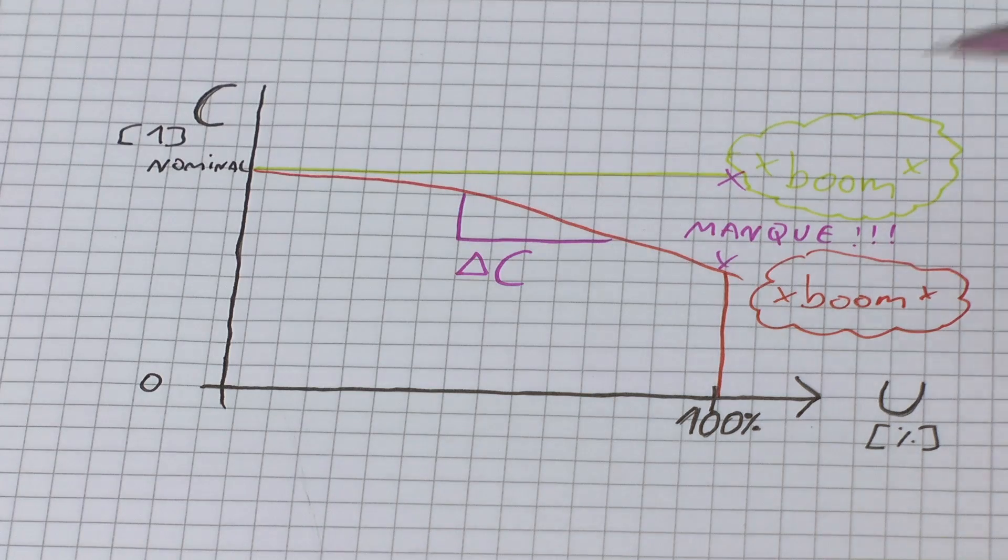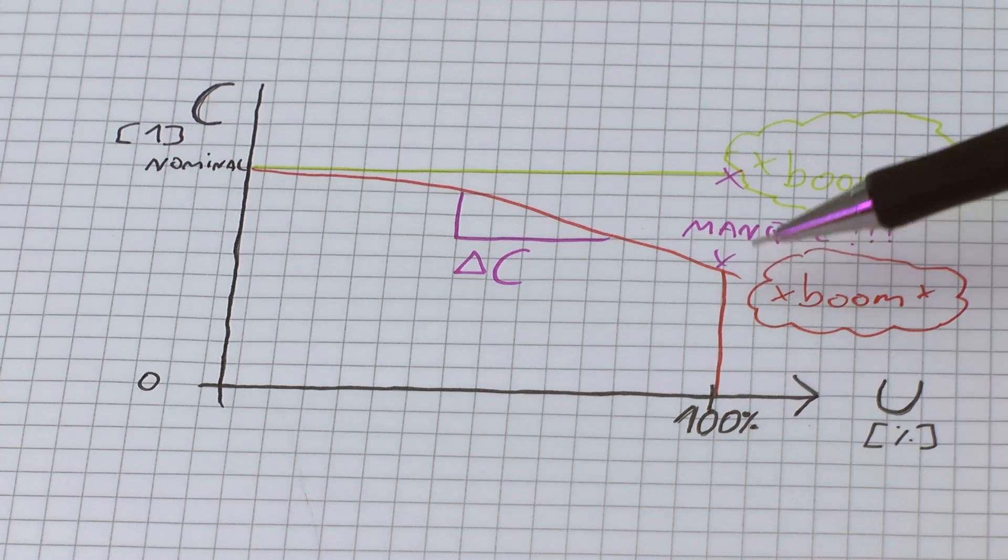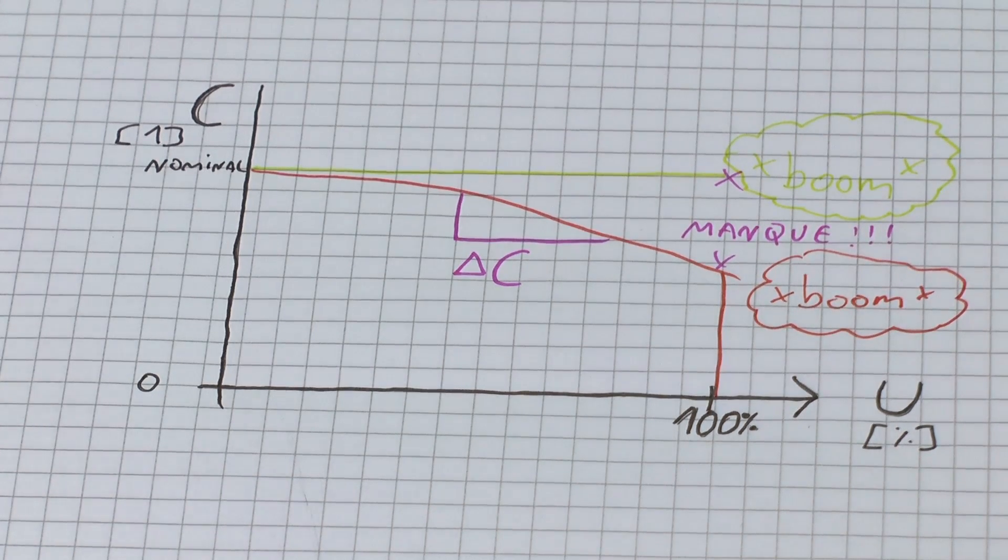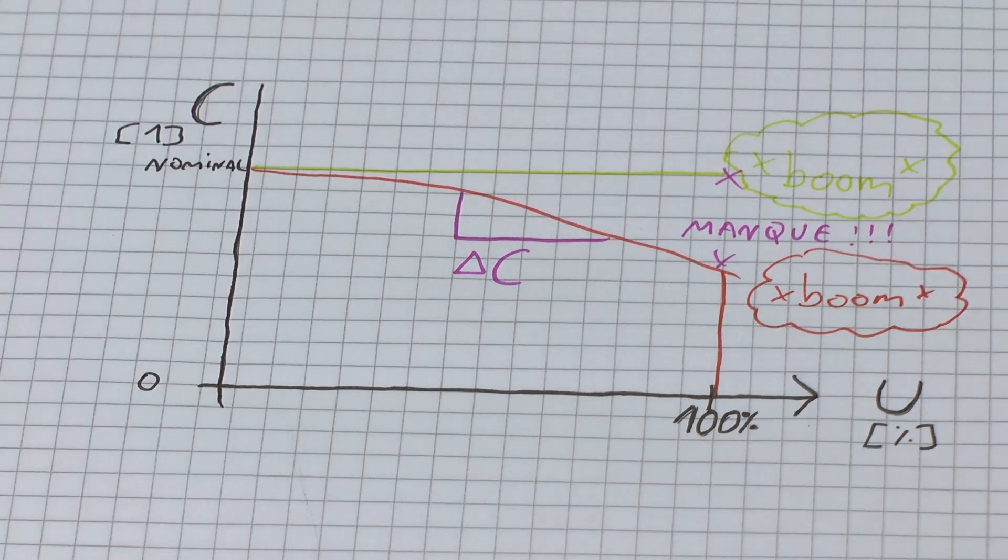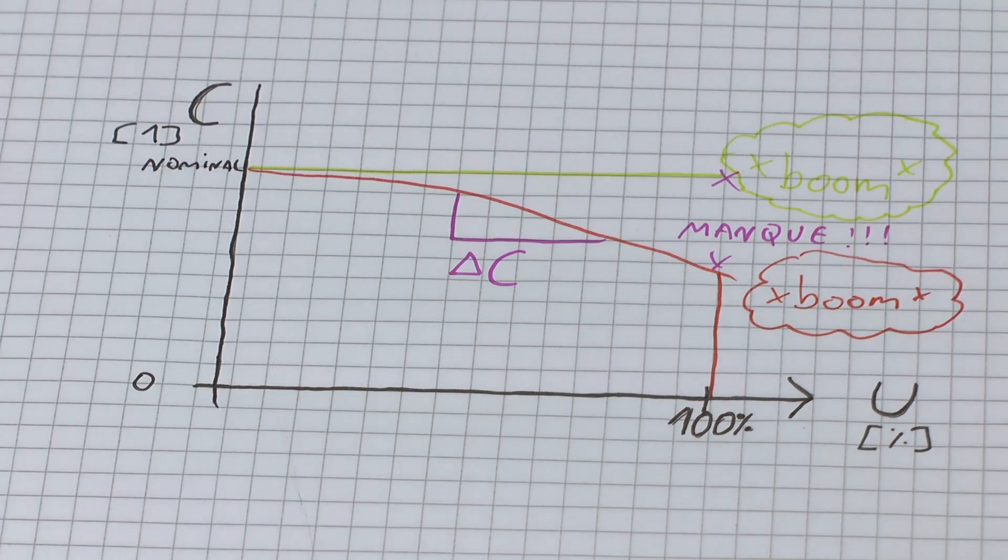But as we will see, in many cases, we actually lose capacitance and we can lose quite a bit of capacitance, 40% or more, as the voltage increases. And this is problematic for two reasons.